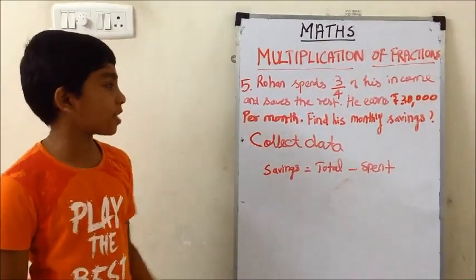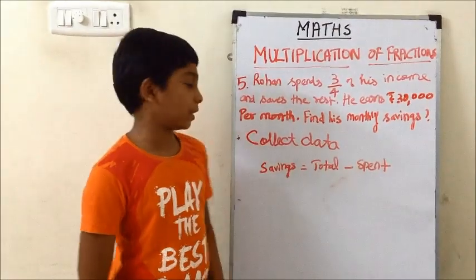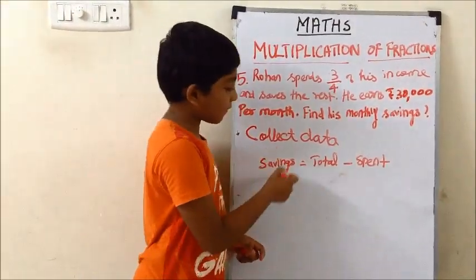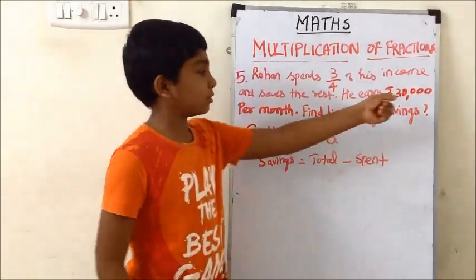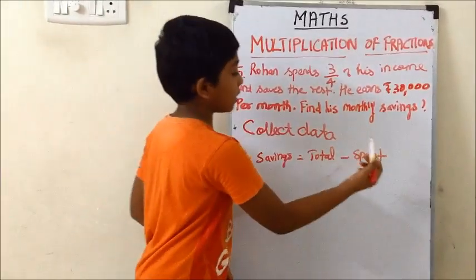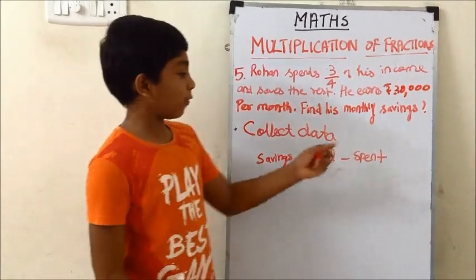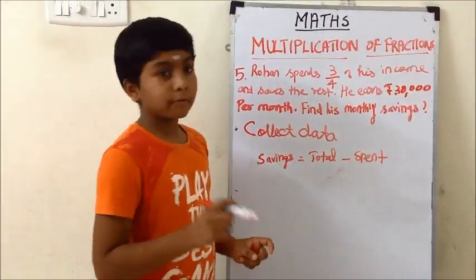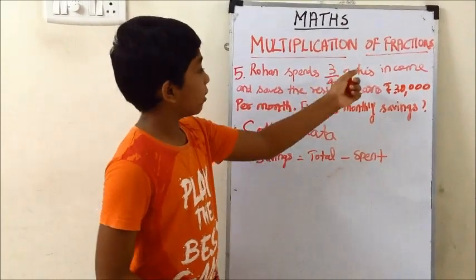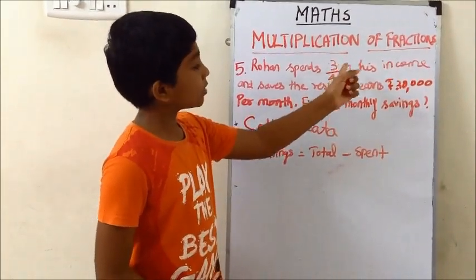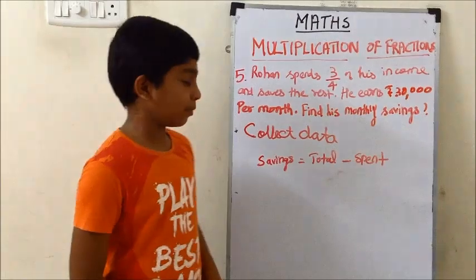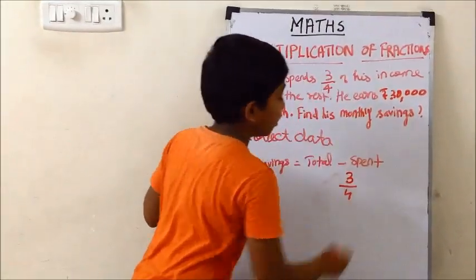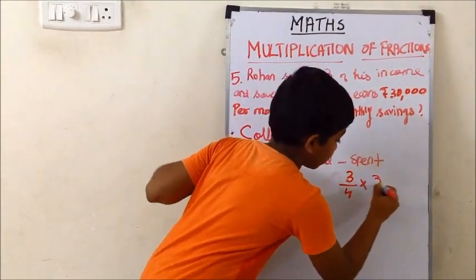The question is to find his monthly savings. Savings equals total amount minus spent amount, that is 30,000 minus spent. We need to find how much he spent. The data tells us he spends 3/4 of his income, so we need to calculate 3/4 into 30,000.